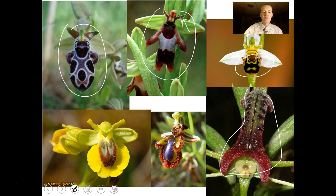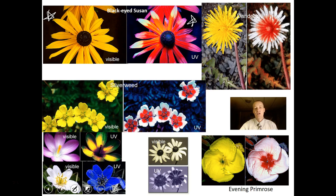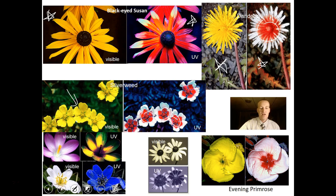Here are some UV color patterns. This is what humans see in a black-eyed Susan — but this is what bees perceive in ultraviolet wavelengths. Here's a dandelion as we see it — but this is what a bee sees: notice the bullseye. In silverweed we see a plain flower, but the bee sees a bullseye. The evening primrose also has a bullseye we don't see.